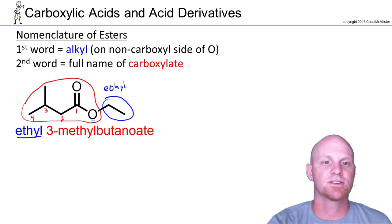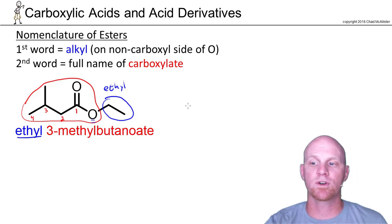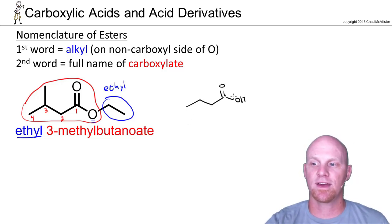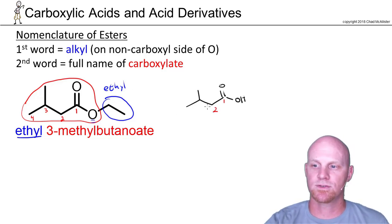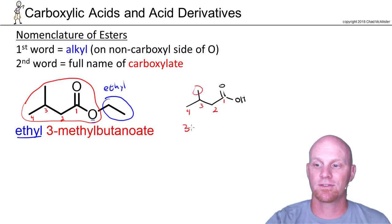Now the second word is just the entire name of this carboxylate, and the carboxylate's name is similar to the corresponding carboxylic acid. So if you notice, if we had this carboxylic acid right here, you learned numbering it one, two, three, four. You've got a methyl group attached to carbon three, and you'd call this 3-methylbutanoic acid.